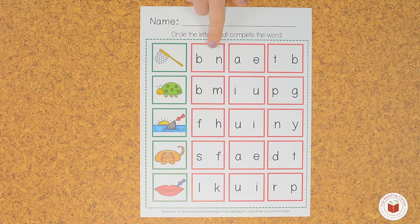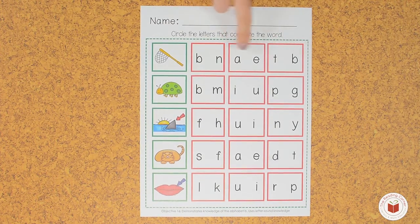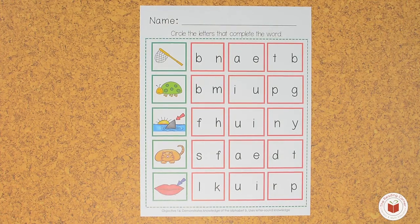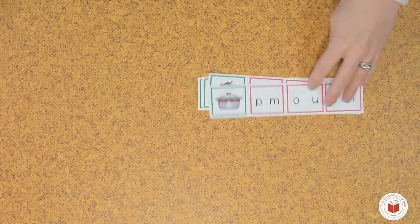But in this activity, we have boxes that have options for the letters you're going to be using. So for the first activity, I really like to cut it up so it's a little bit more manageable for you.